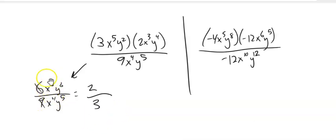Then you can simplify from there. 6 ninths is the same as 2 thirds. X to the 8th over X to the 4th, that's going to leave me X to the 4th in the numerator up top. Y to the 6th over Y to the 5th, that leaves me one Y up top. So you can go that route.